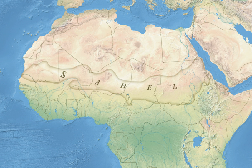Several isolated plateaus and mountain ranges rise from the Sahel, but are designated as separate ecoregions because their flora and fauna are distinct from the surrounding lowlands. Annual rainfall varies from around 100 to 200 millimetres in the north of the Sahel to around 600 millimetres in the south.